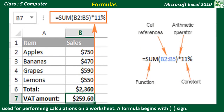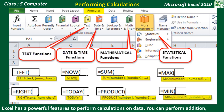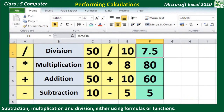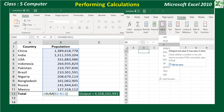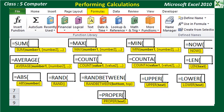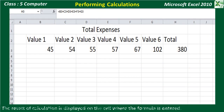Formulas generally begin with an equal to sign. Performing Calculations: Excel has a powerful feature to perform calculations on the data. You can perform addition, subtraction, multiplication, and division of numbers either using formulas or functions. Formulas are equations that perform calculations on values in your worksheet. A formula consists of a combination of cell references, numbers, operators, and Excel functions. The result of the calculation is displayed in the cell where the formula is entered.